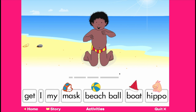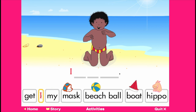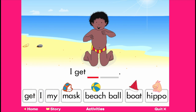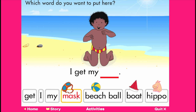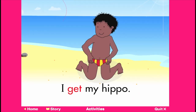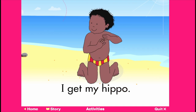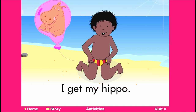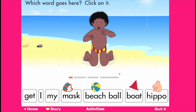Now it's your turn to write a story. This Mighty Writer activity allows students to repeat and reconstruct the sentences that they read in the story. Students select words to build sentences such as 'I get my hippo.'